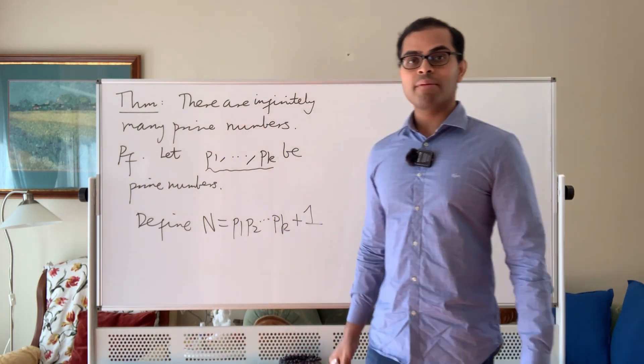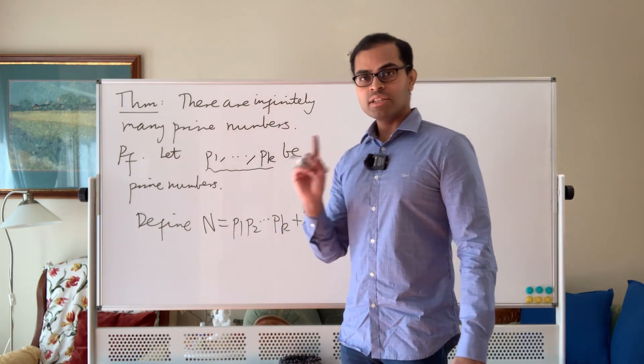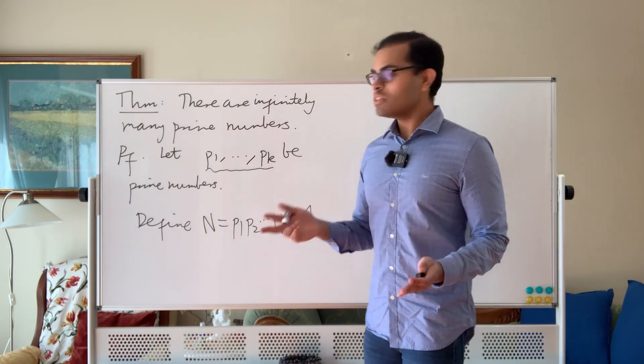And now we're going to use N to create another prime factor that was not in the list. So here's how that works. The first possibility is N is prime.